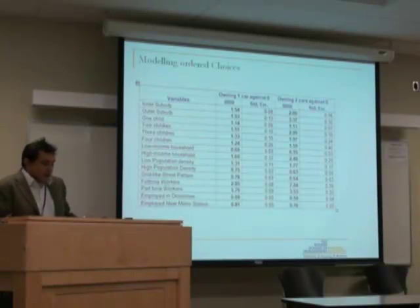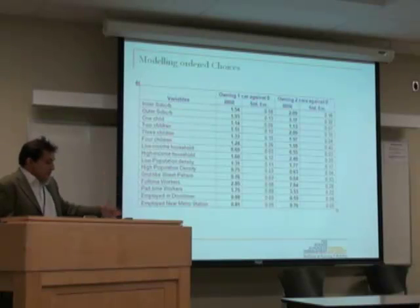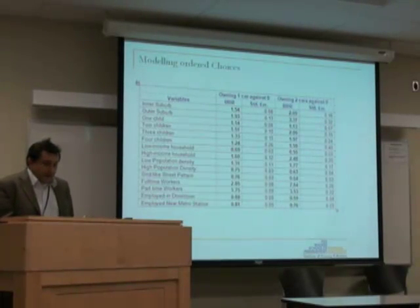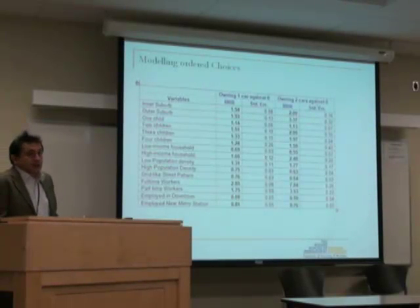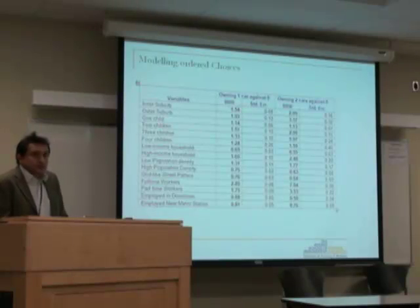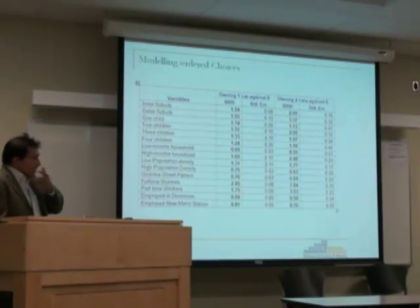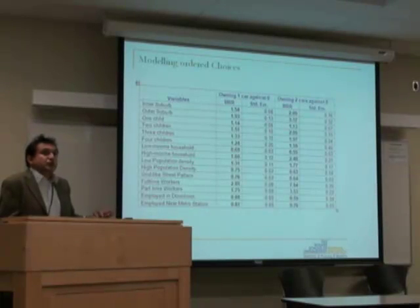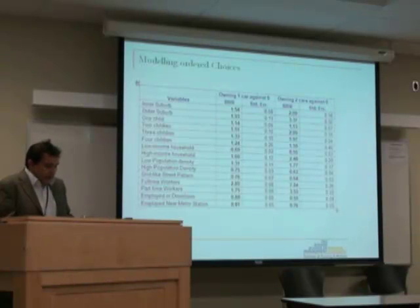We compared the odds of owning one car against zero as a function of these explanatory variables, and owning two cars against zero. In multinomial logit, we compute the odds ratio, which in Stata is called the relative risk ratio — it's the same thing. It's the coefficient that you estimate and take the exponential of, and that becomes the odds ratio or risk ratio.